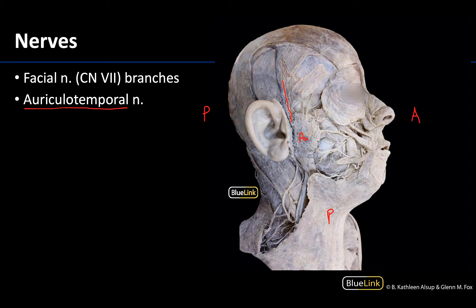Also extending out from the peripheries of the parotid gland, you can see these branches of the facial nerve. It is fairly robust in terms of the number of branches that you have. We aren't going to get into the specific names quite yet of these branches of the facial nerve or cranial nerve 7 — we will do that in the next session — but we do want you to be aware that these are the facial nerve branches, heading towards some of these muscles of facial expression.